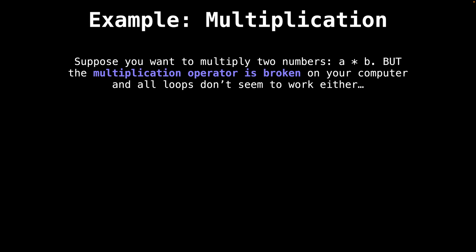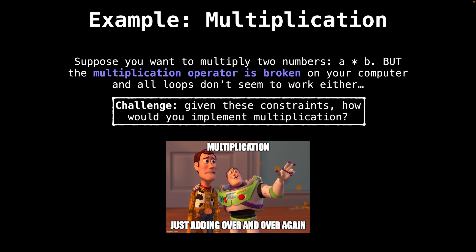So for today's problem, we're going to have a crack at implementing multiplication recursively. The problem goes as follows: suppose you want to multiply two numbers a and b, but the multiplication operator on your computer is broken, and none of the loops seem to work either. So given these constraints, the challenge is how would you take the product of two numbers? I think the meme below gives a pretty big hint.